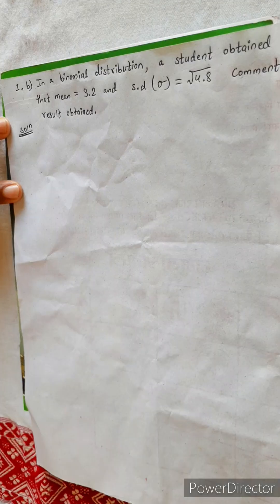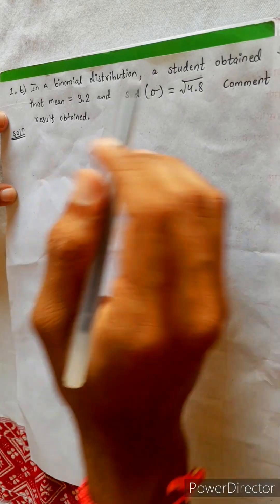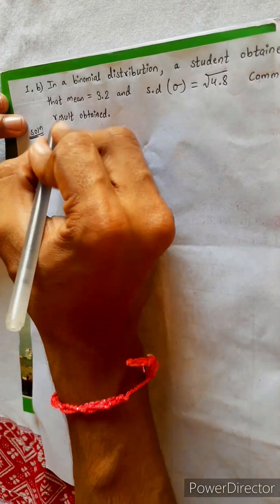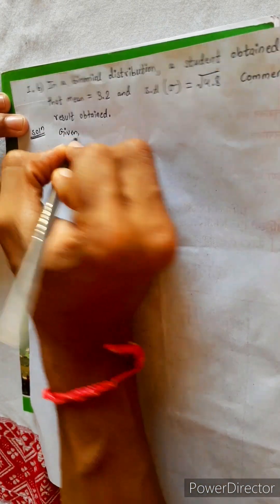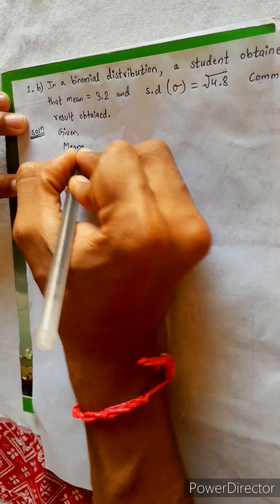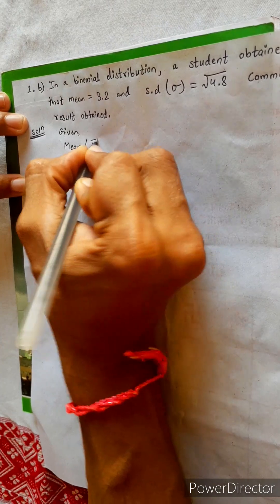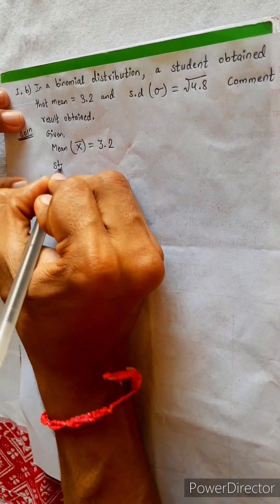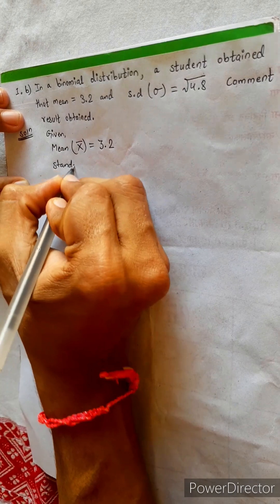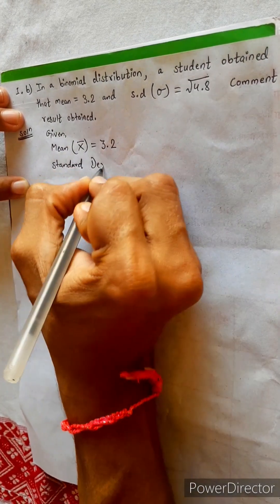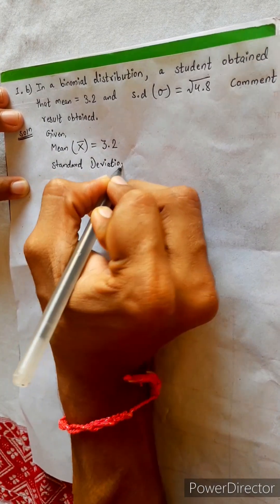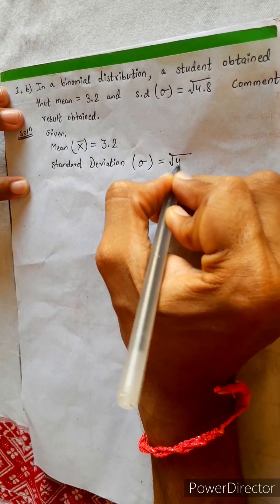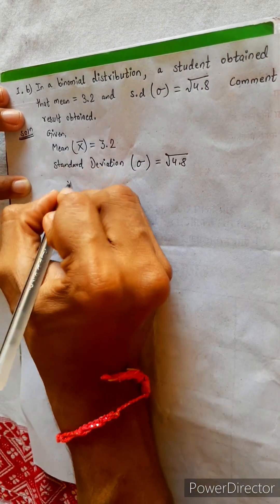So, number B. In a binomial distribution, a student obtains the results that mean is given. X bar equals to 3.2. Standard deviation sigma equals to root 4.8.